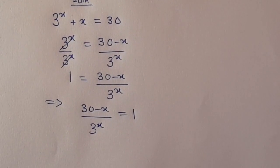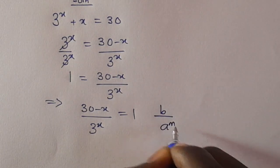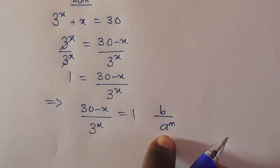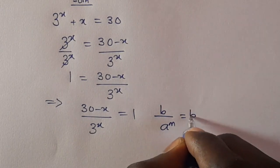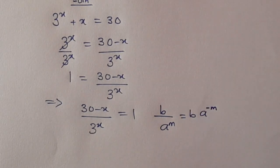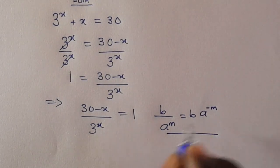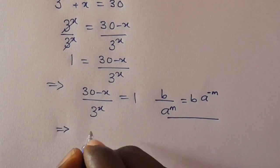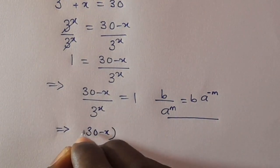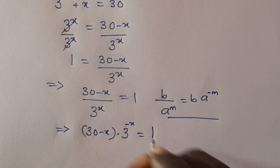Now we have to recall, according to the law of indices: when you have b divided by a raised to the power m, this denominator can be expressed as b multiplied by a raised to the power minus m. Let's apply this expression here, then we have (30 minus x) multiplied by 3 raised to the power minus x equals 1.